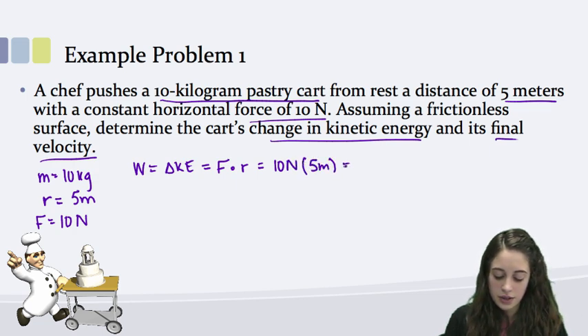To find my change in energy, I know that the work done is going to be equal to my change in kinetic energy of the cart from the work energy theorem. And I also know that my work done is equal to force times the displacement of the cart. So I can plug in the numbers and I'll get that work done is equal to 10 newtons times my displacement of 5 meters, which is just equal to 50 joules.